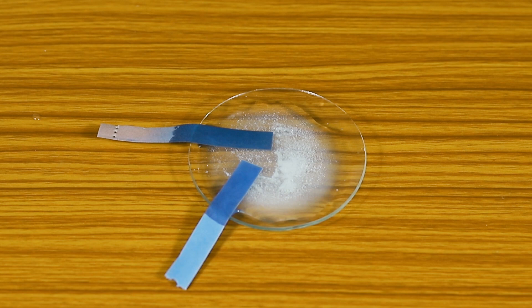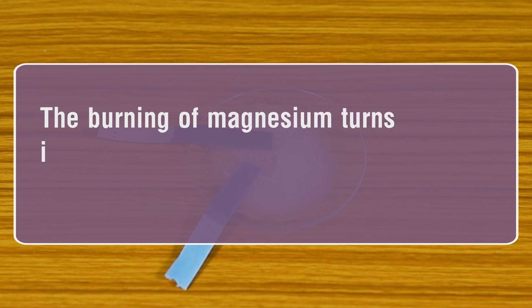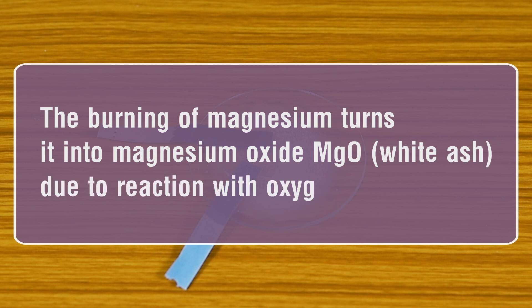What do we observe? There is no change in color of blue litmus paper. The red litmus paper turns blue. The burning of magnesium turns into magnesium oxide (MgO) white ash due to reaction with oxygen in air.